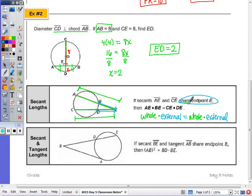When I have a secant and a tangent, it says if secant BE and tangent AB, once again they share an endpoint, then this theorem holds true. It's AB, and AB is the tangent, so tangent squared equals BD times BE. So BD is the external, and BE is the whole. So once again, that's equal to whole times external.